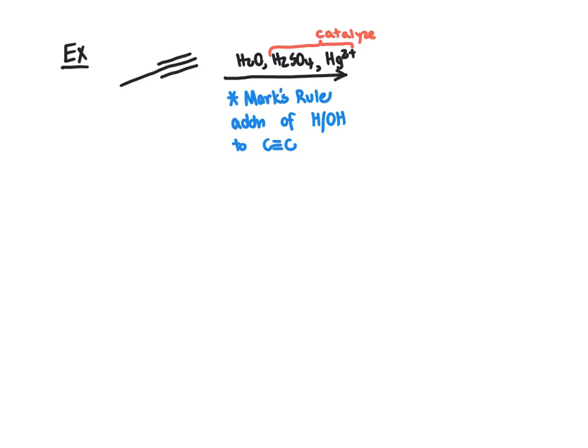Markovnikov's rule says we need to add the H to the less substituted carbon — the carbon that has more hydrogens directly bonded to it and fewer alkyl substitutions — and the OH goes on the more alkyl-substituted carbon. Following that guideline, our product still has a carbon-carbon double bond, with an OH group at the more substituted carbon and a new hydrogen at the less substituted carbon. So rather than having CH at the terminal position, we'll have CH₂. Since we started with a triple bond, we go down to a double bond after the addition of H and OH.